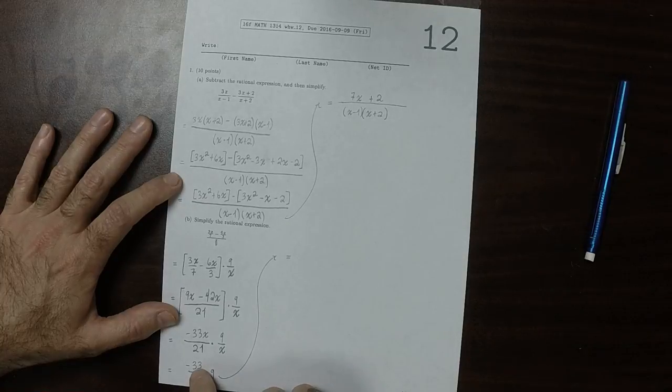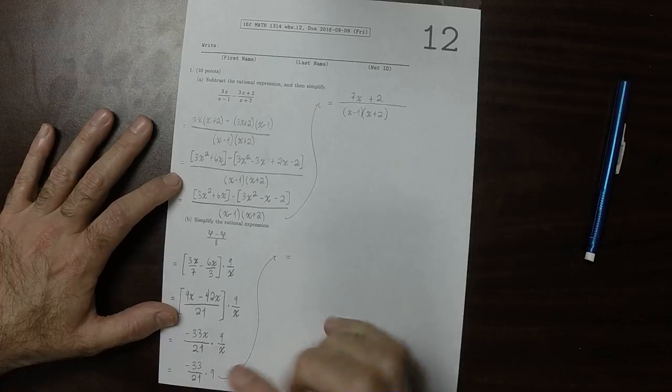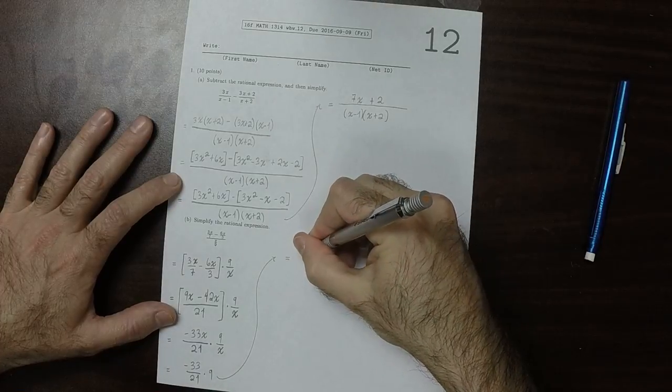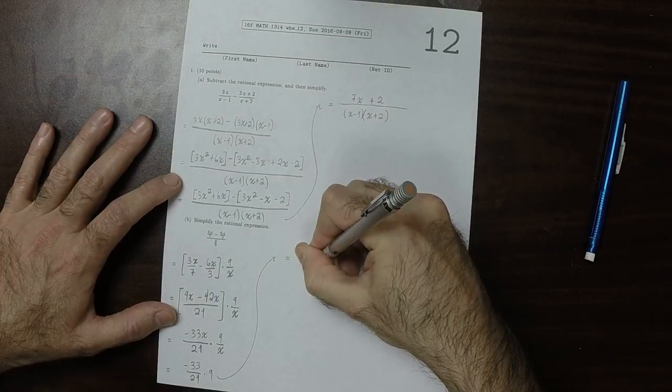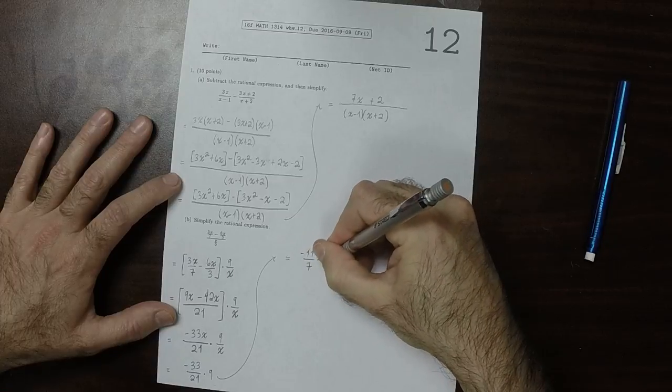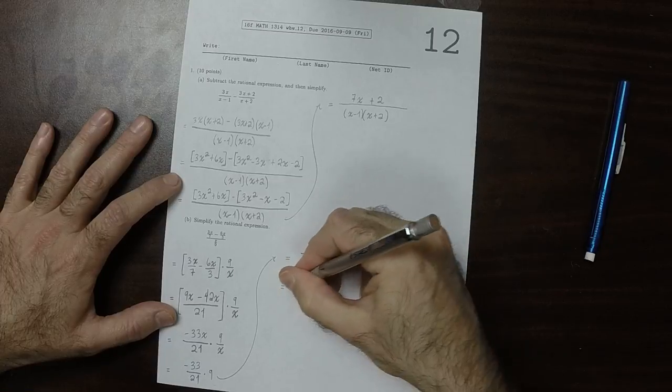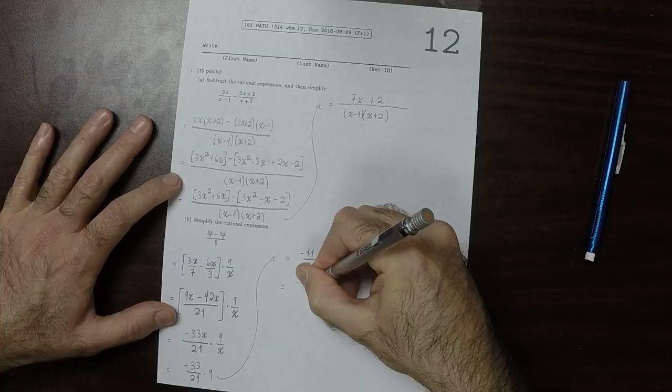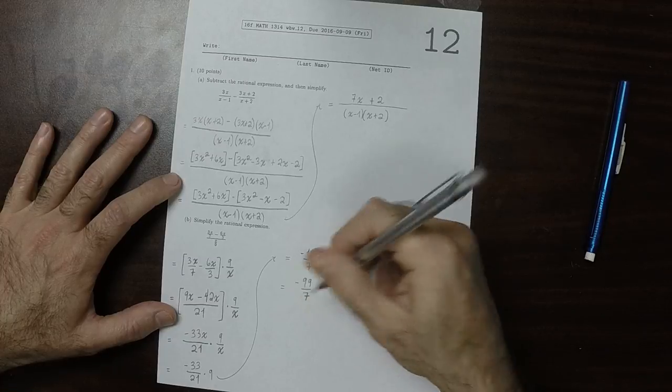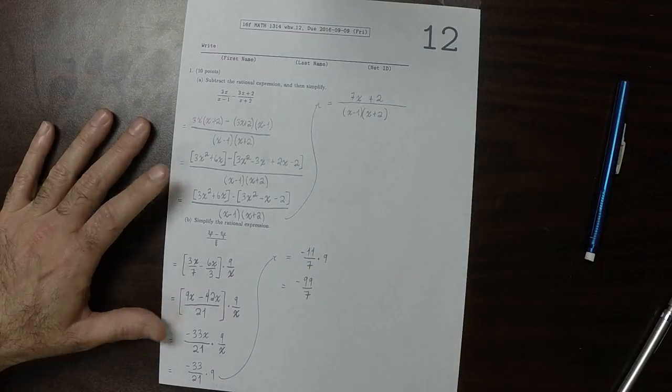We get negative 33 over 21 times 9. Now there's a 3 in the 33 and there's a 3 in the 21, so that would be negative 11 over 7 times 9, which would be negative 99 over 7. And that's the answer.